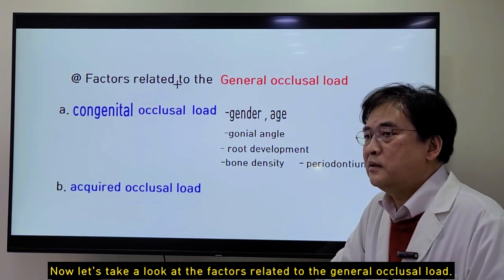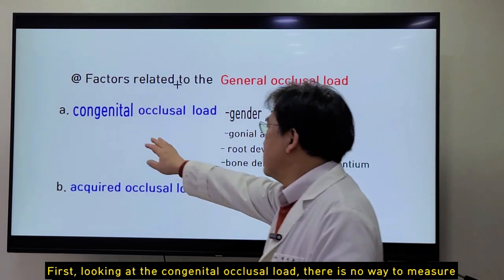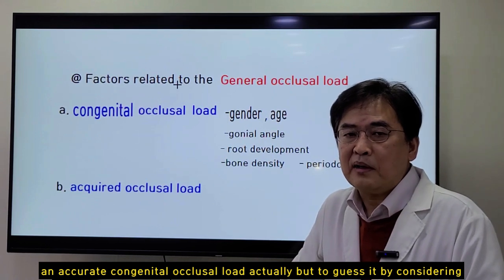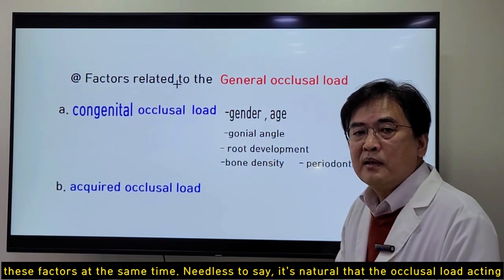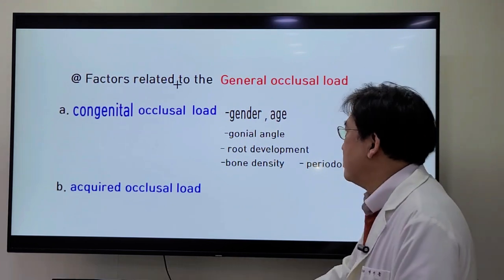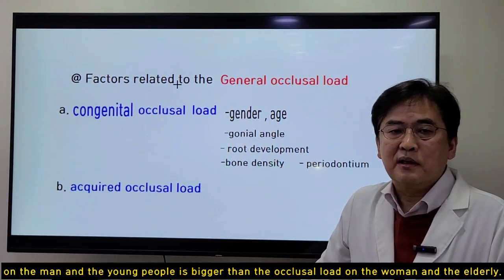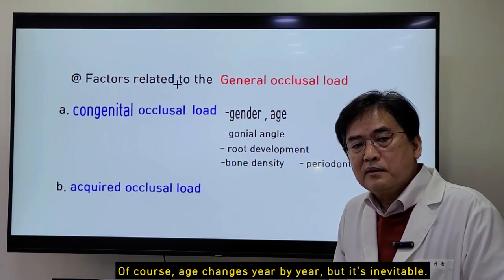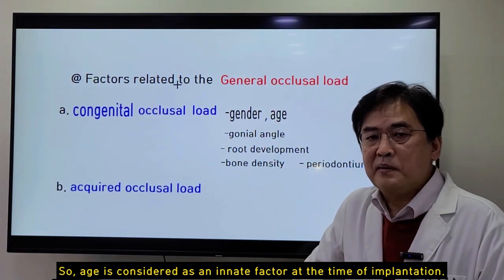Let's take a look at the factors related to general occlusal load. Looking at congenital occlusal load, there is no way to measure an accurate congenital occlusal load, but to estimate it by considering these factors at the same time. Needless to say, the occlusal load acting on men and young people is bigger than the occlusal load on women and the elderly. Age is considered as an innate factor at the time of implantation.